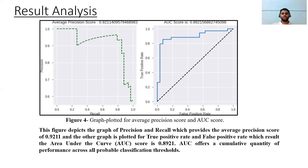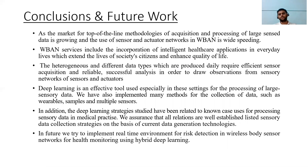This graph is plotted for average precision score and AUC score. The figure depicts the graph of precision and recall, which provides an average precision of 0.9211. Another graph is plotted between true positive rate and false positive rate, which results in an AUC — area under the curve — score of 0.8921. AUC offers a cumulative quality of performance across all probable classified tissues. The top-of-the-line technology for acquisition and processing of large sensor data is growing and the use of sensors and accurate data networks in WBAN is widely spreading.